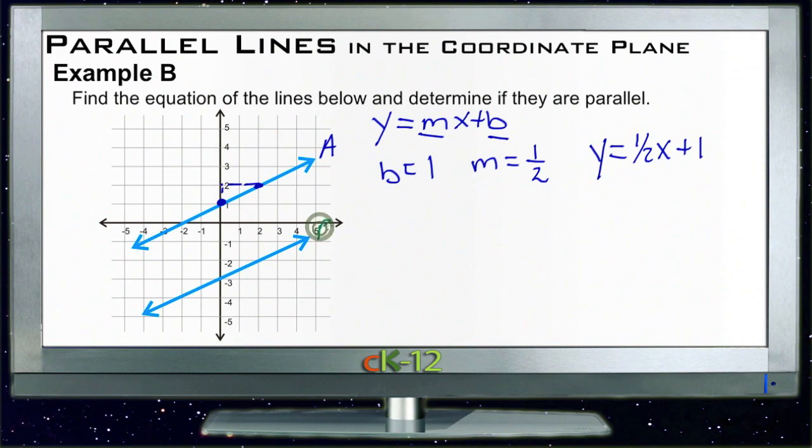Now for our other line, we'll do it in green. We'll call this one B. Line B has a Y intercept of negative three, so B equals negative three. Its slope is rise one, run two, so M is also one half. That says that its equation is Y equals one half X minus three.